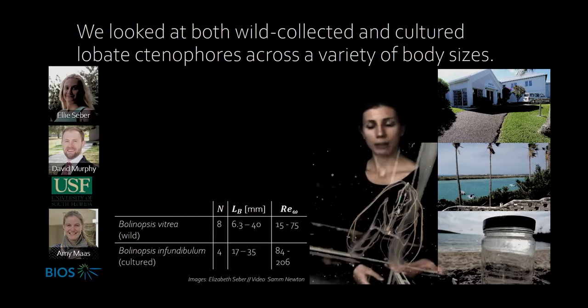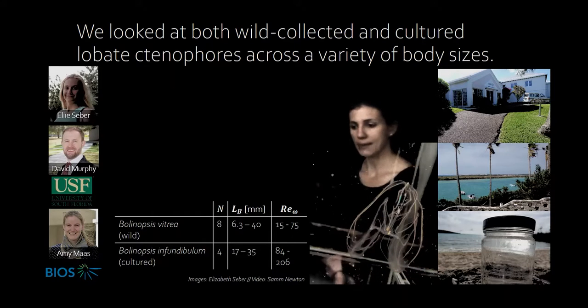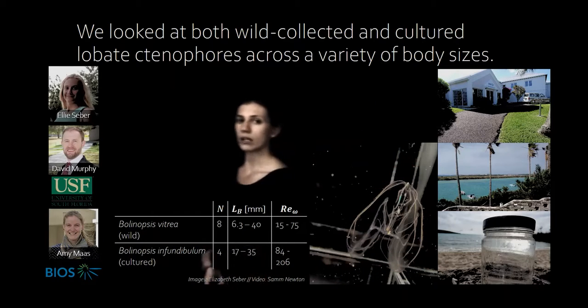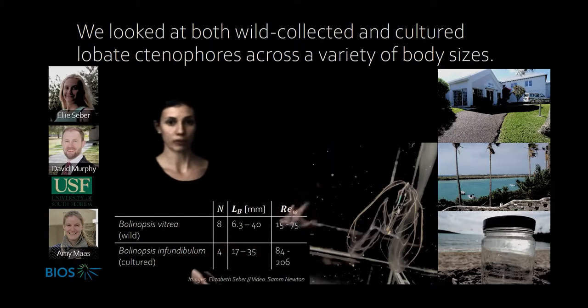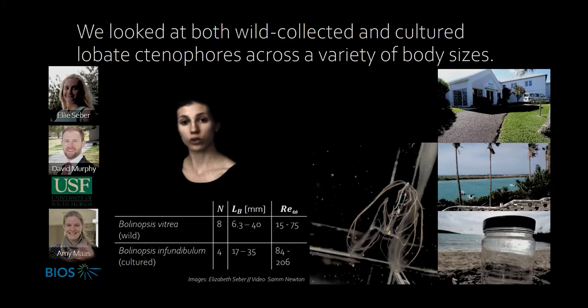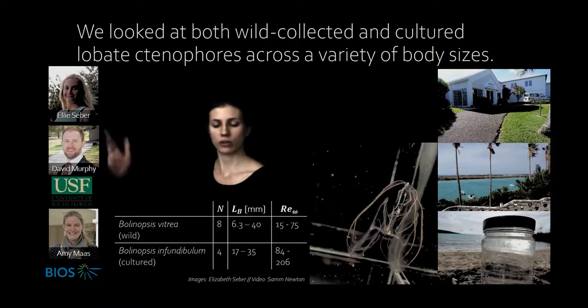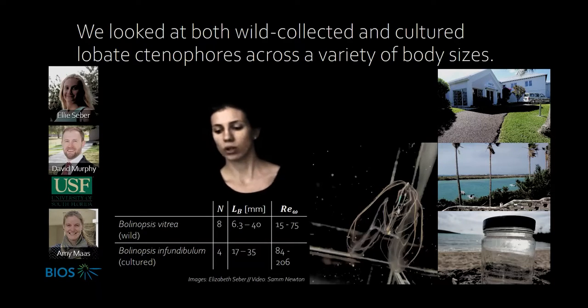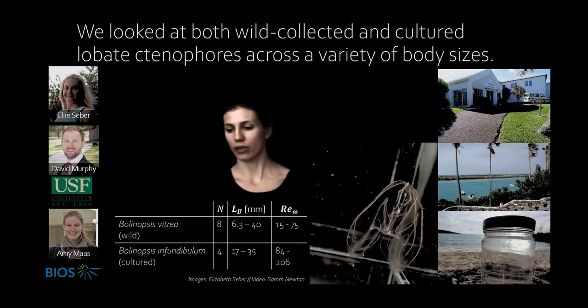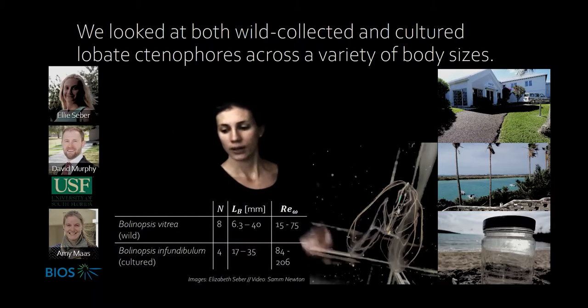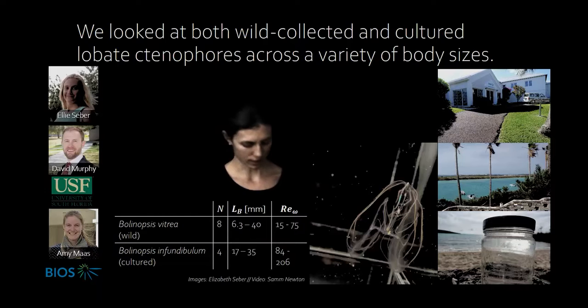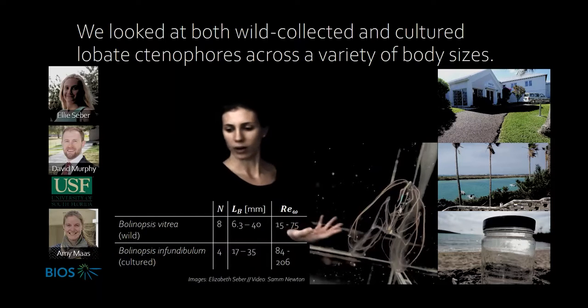We did a bunch of experiments to try to see what was happening in real animals. We used two different locations to collect animals for the study. The first one was the Bermuda Institute of Ocean Sciences in collaboration with oceanographer Amy Moss, mechanical engineer David Murphy. A lot of these experiments were carried out by Elizabeth Sieber who's a former undergraduate student in our lab. We collected animals by snorkeling primarily at Flats Inlet and the mouth of Harrington Sound at Bermuda.